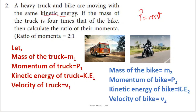The bike is second. So the truck is 1 and the bike is 2. Momentum of the truck is P1, kinetic energy of the truck is KE1, velocity of the truck is V1. For the bike: mass M2 and velocity V2.